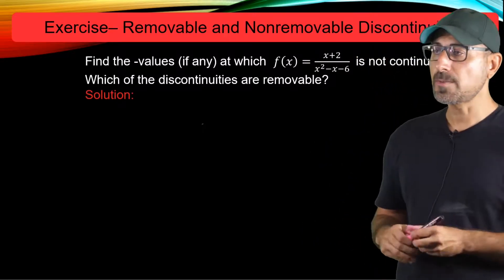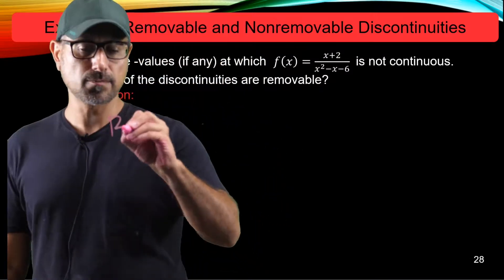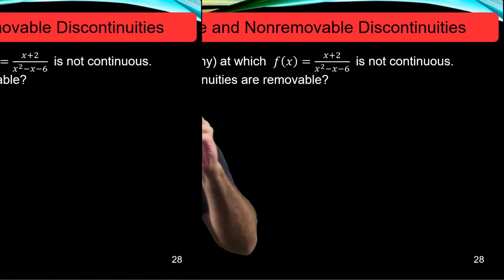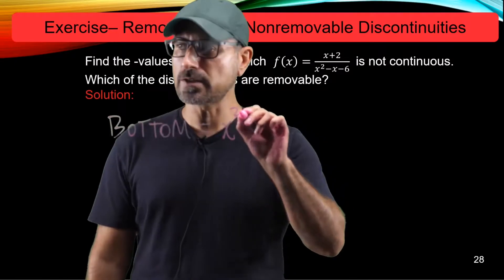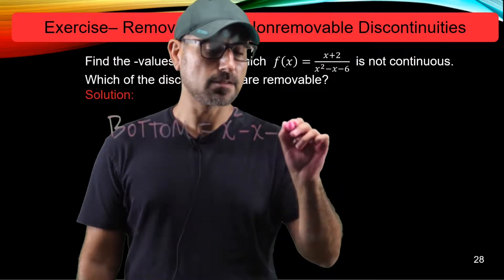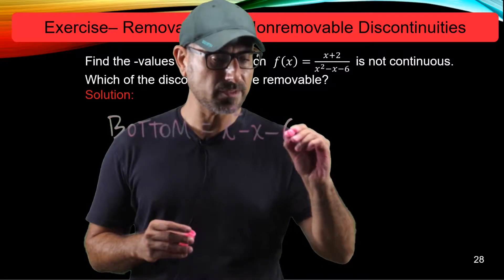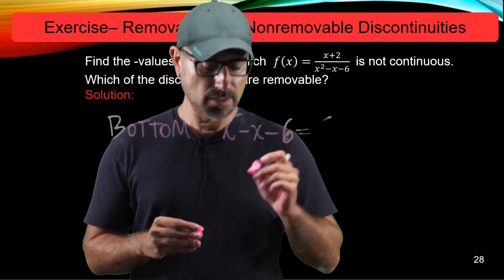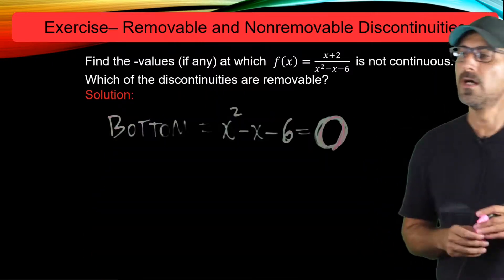The bottom function is x squared minus x minus 6. We want to investigate if there is any x that makes the bottom equal to 0.